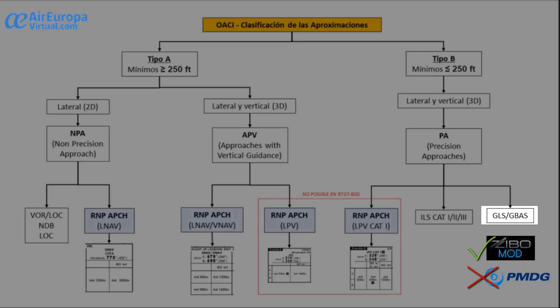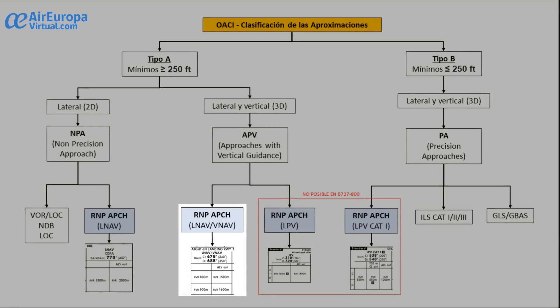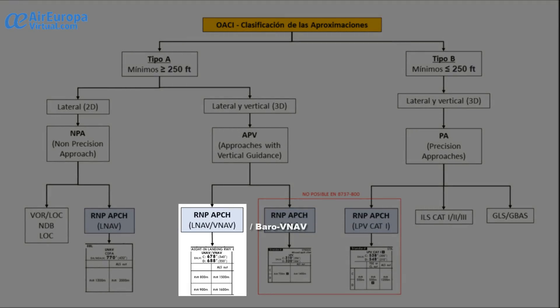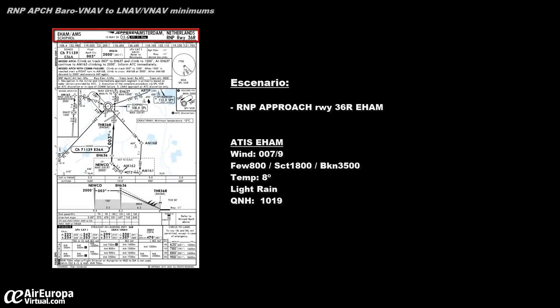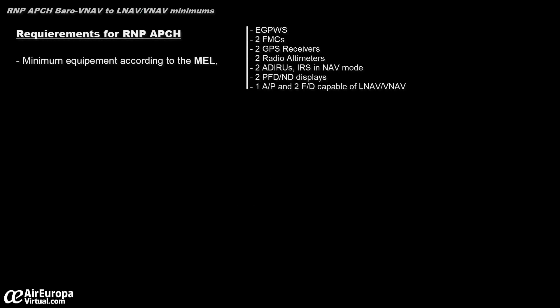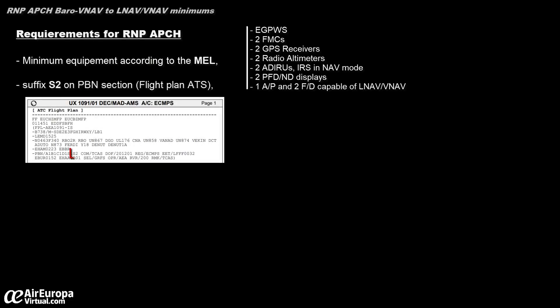Once the summary is done, in this video we are going to focus on the RNP approach BARO-VNAV down to LNAV/VNAV minima, and we will also use the IAN capability of our 737. When we expect to make an RNP approach, we will check that we have the minimum equipment onboard and that it is fully operational. We also need to have in the flight plan the suffix S2 in the PBN section.